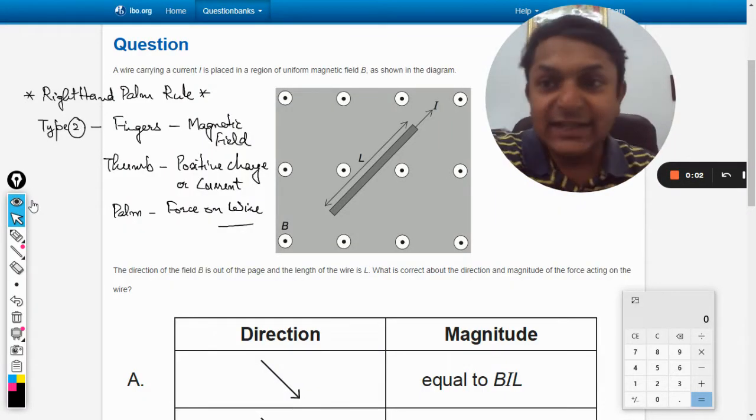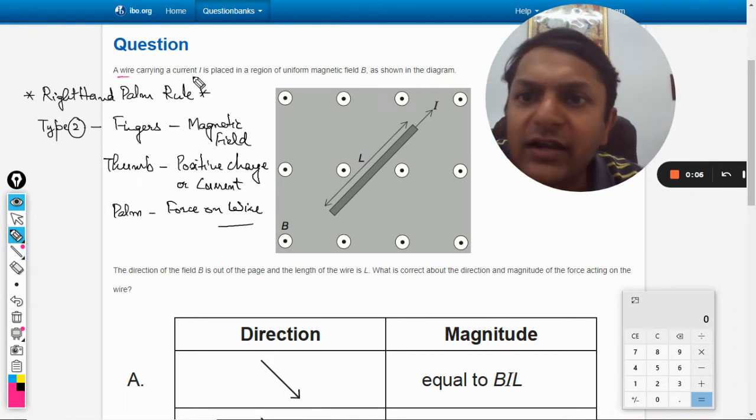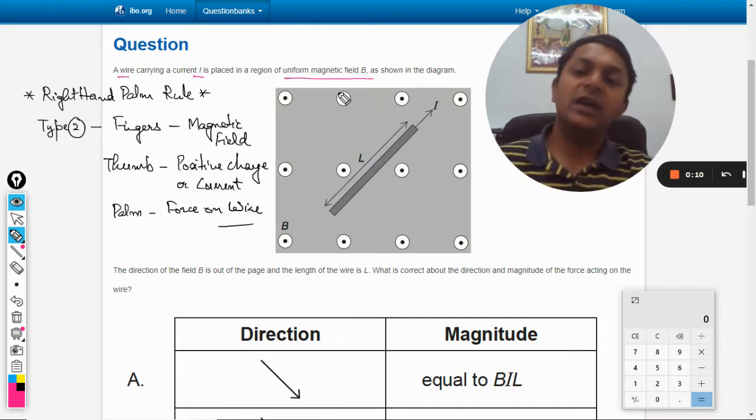Okay dear students, let us see this question. A wire carrying a current i is placed in a region of uniform magnetic field b as shown in the diagram.